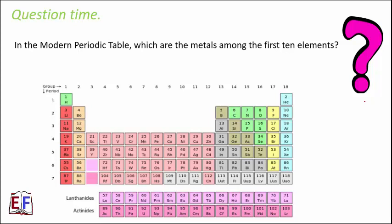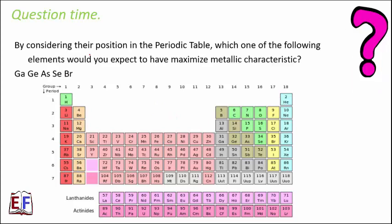In the modern periodic table, which are the metals among the first 10 elements? The first 10 elements are hydrogen, helium, lithium, beryllium, boron, carbon, nitrogen, oxygen, fluorine, and neon. Most of these elements are on the right-hand side, so they are not metals. The only metals are lithium and beryllium. Hydrogen is an exception — it is on the left-hand side but is not a metal.